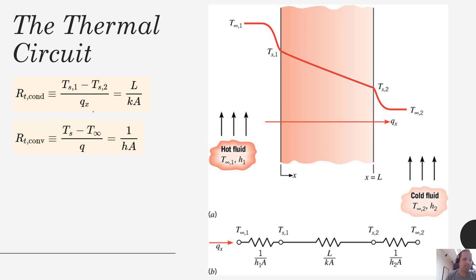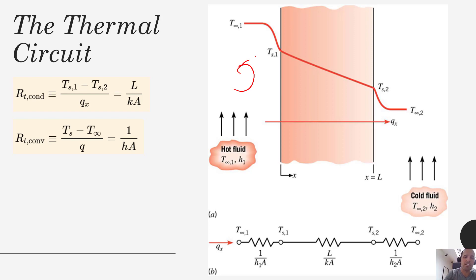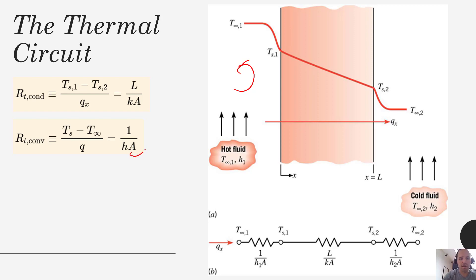The convective thermal resistance for a plane wall — and this is actually the same for other systems as well — is 1 over h times A. If we wanted to get more heat transfer we could increase the velocity of that fluid, which increases the convective heat transfer coefficient h. If we increase h, our convective thermal resistance will be smaller, meaning less resistance to heat transfer and a higher total flow of heat. The same applies to area — a bigger surface area gives less thermal resistance and more heat transfer.